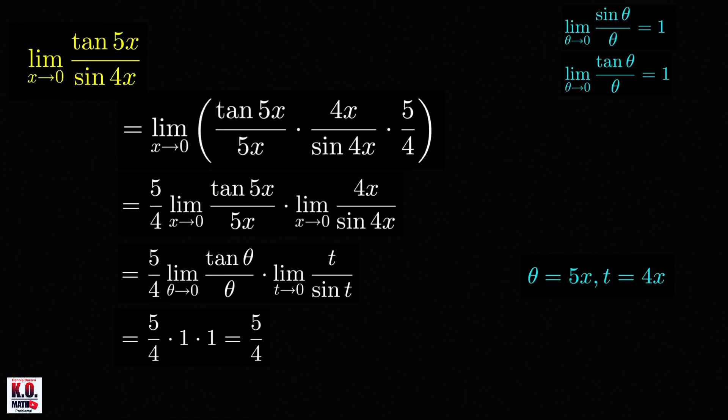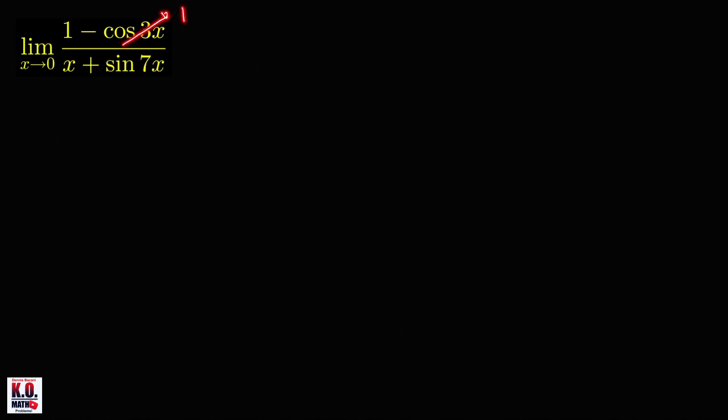Let's now move to our last problem. As x approaches 0, cos(3x) will approach cos(0) which is 1, so the numerator approaches 1 minus 1, which is 0. The denominator approaches 0 plus sin(0), which is also 0. So again, we have an indeterminate form 0 over 0, and we need to use known limits involving sine and cosine.